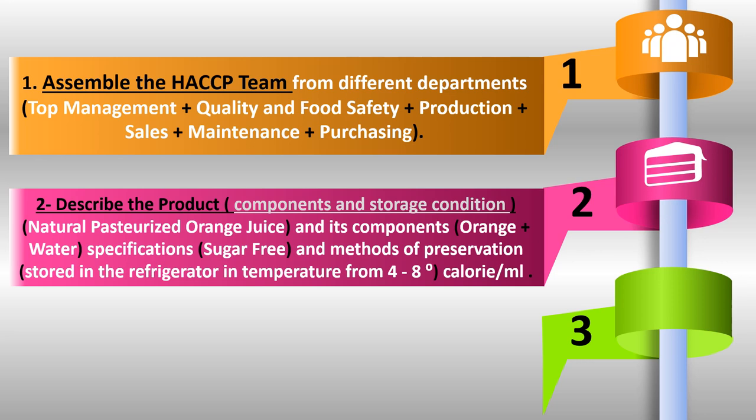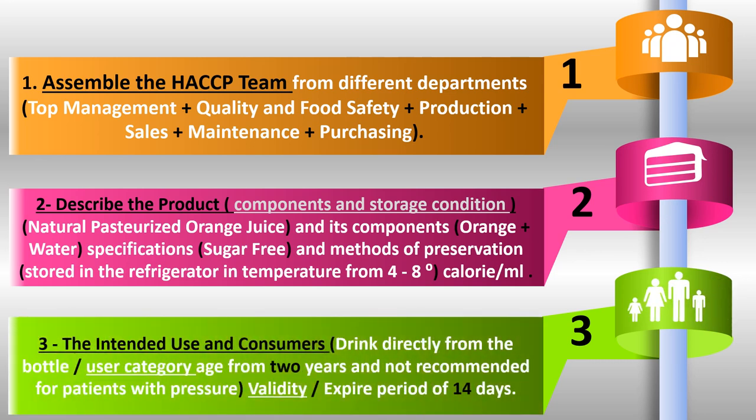Step 3: the intended use and consumers. The intended use is that it can be drunk directly from the bottle. The user category is from age two years and older, and it is not recommended for patients with high blood pressure. Any medical precautions must be mentioned on the product label, along with the expiry period of 14 to 15 days.